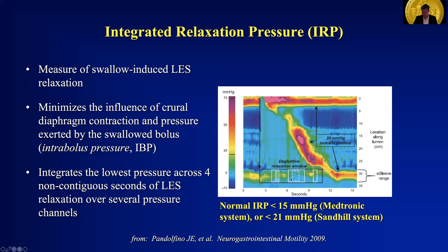We are looking at the lowest pressure at any four seconds in that window — that's why we call it the integrated relaxation pressure. A normal integrated relaxation pressure is less than 15 mmHg for the Medtronic system, as it's currently known, or less than 21 mmHg in the Sandhill system. For the purposes of the manometry report, we're looking at the median integrated relaxation pressure for all 10 of the swallows that are performed during the study.